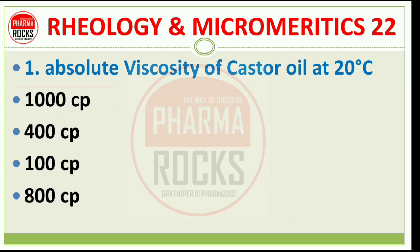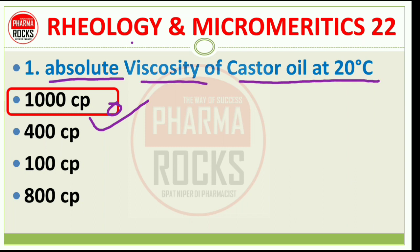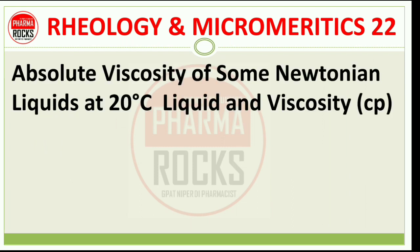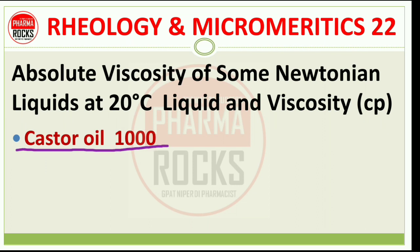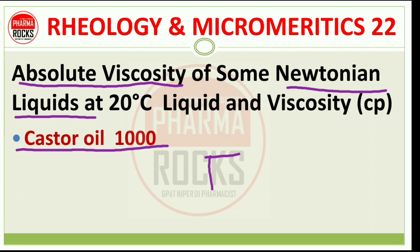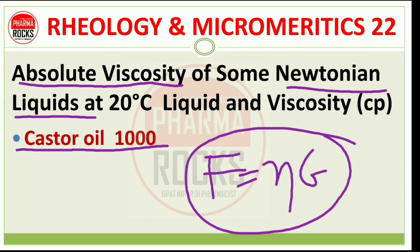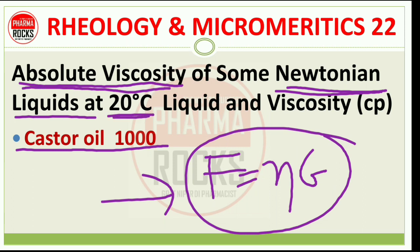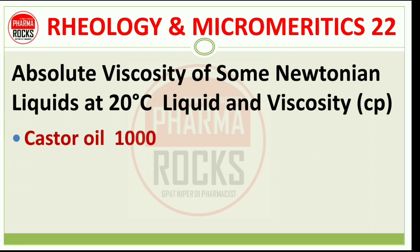The right answer for this MCQ is option number A — 100 centipoise. Let's check the explanation. The absolute viscosity of some Newtonian liquids at 20 degrees Celsius: for castor oil, it is 1000. This table is important for you — absolute viscosity of Newtonian liquid at 20 degrees Celsius. Newtonian fluids follow F = η × G.